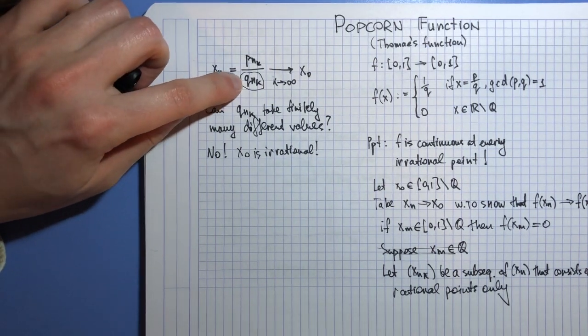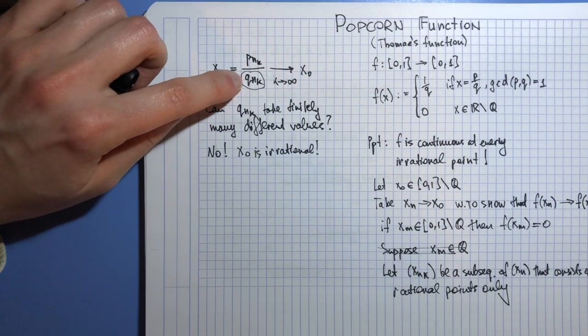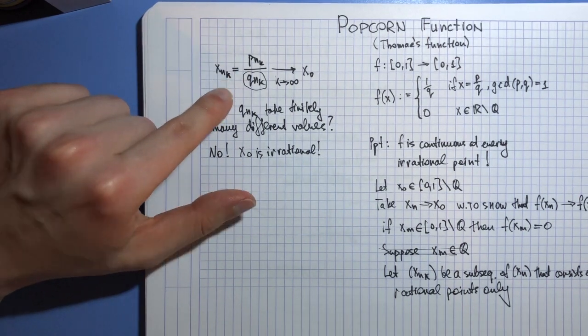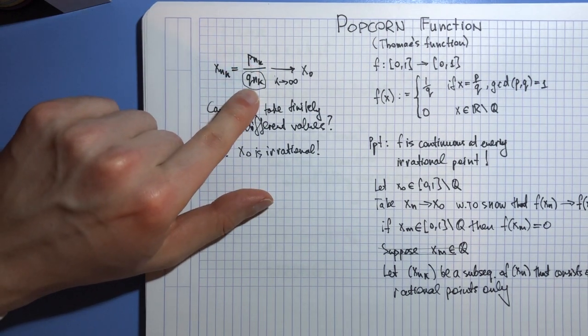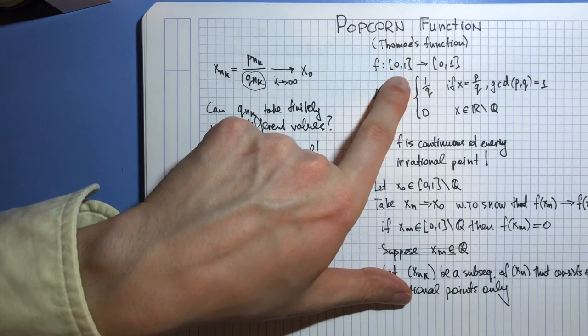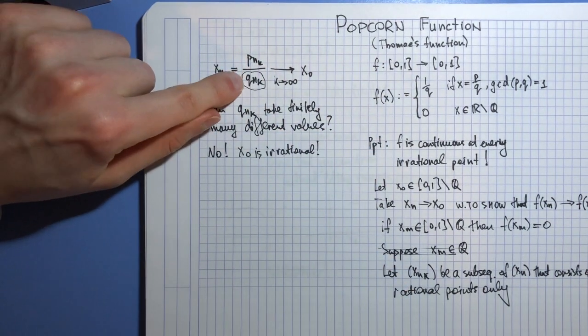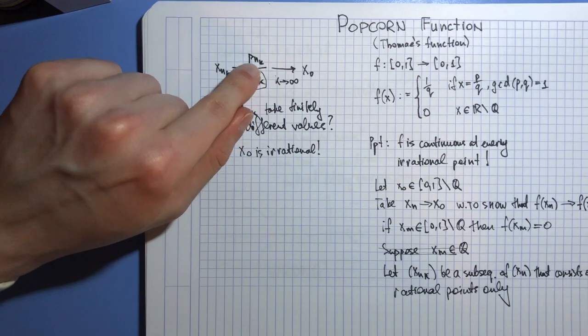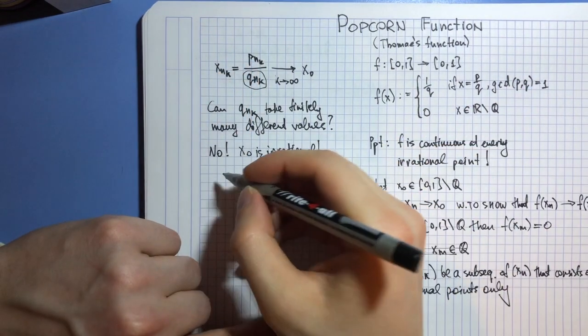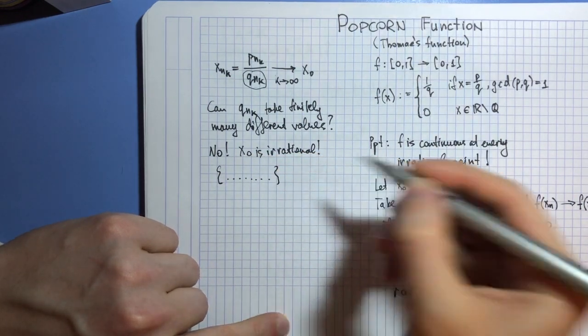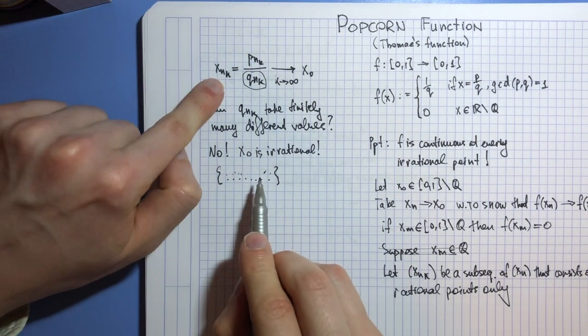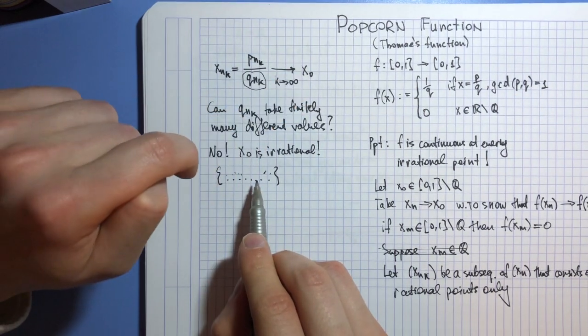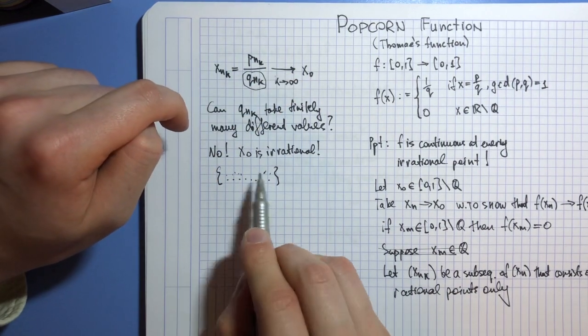Or you can also judge from contradiction. If you assume that denominators can only take finitely many different values, then your sequential terms are also coming from a finite set, because pₙₖ is bounded above by the denominator. We are only working in this set, so the top of this fraction cannot exceed the bottom. If you limit the set over which this guy can vary, this guy will also be limited. What you will end up having is a finite number of fractions from which you can choose your terms to be, and clearly you cannot approach an irrational point with arbitrary precision just by staying in this set.